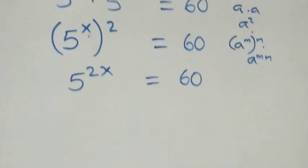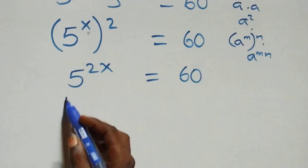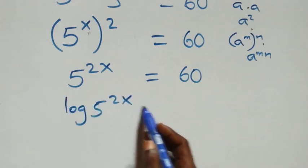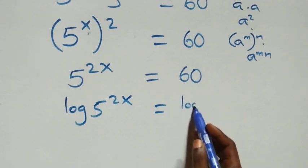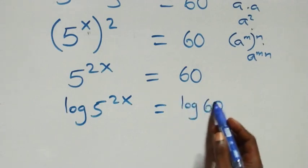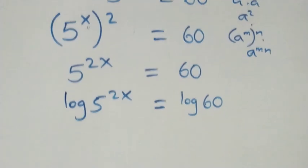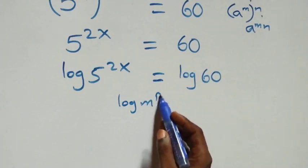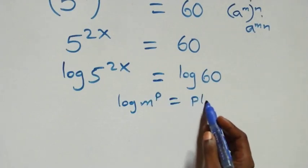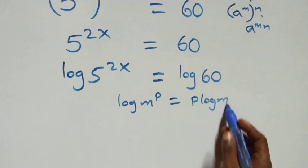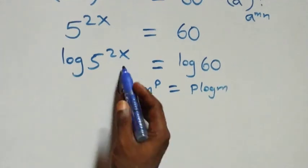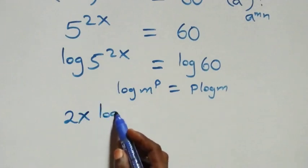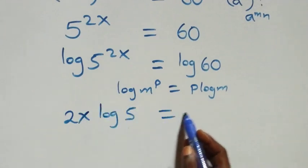The next step: we take the log on both sides and we have log of 5 raised to power 2x equals log 60. Then we apply the power rule of logarithms — log m raised to power p equals p log m — so the power 2x comes down and this becomes 2x log 5 equals log 60.